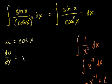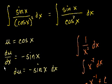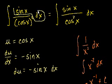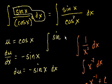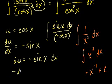With u equal to cosine of x, let's take the derivative of u with respect to x. du/dx equals the derivative of cosine of x, which is minus sine of x. Multiplying both sides by dx gives us du equals minus sine of x dx. Up in our integral we have sine of x dx — not minus sine of x dx — so we multiply both sides by negative 1, giving us minus du equals sine of x dx.